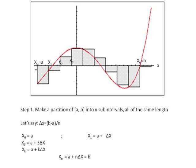Consequently, xn, which is equal to b, the end of the interval, will be a plus n delta x.